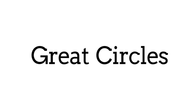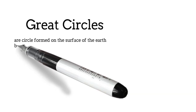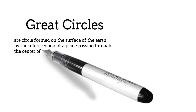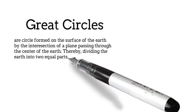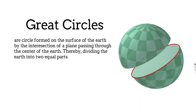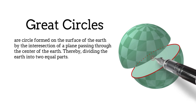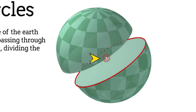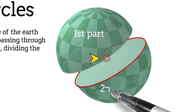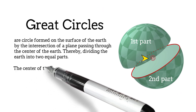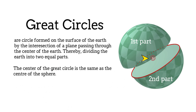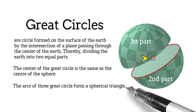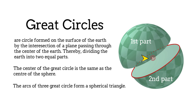Great circles are defined as circles formed on the surface of the Earth by the intersection of planes passing through the center of the Earth, thereby dividing the Earth into two equal parts. The key points in this definition are that it passes through the center of the Earth and it divides the Earth into two equal parts. The center of the great circle is the same as the center of the sphere, and the radius of the great circle is also the radius of the Earth. The arcs of three great circles form a spherical triangle, which will be used for solving problems in other videos.